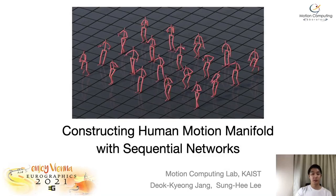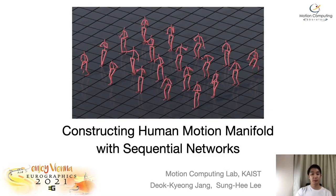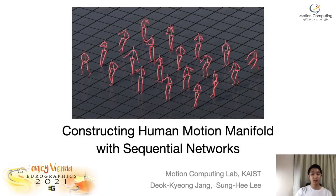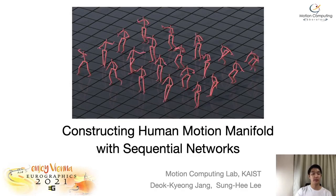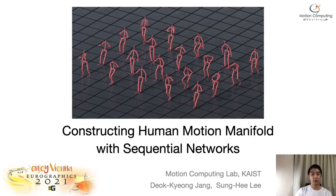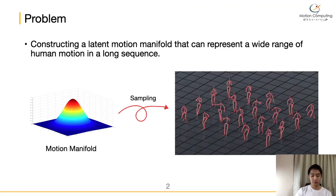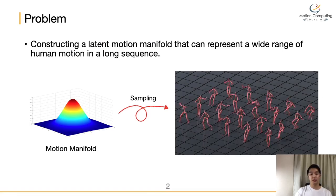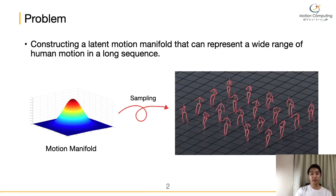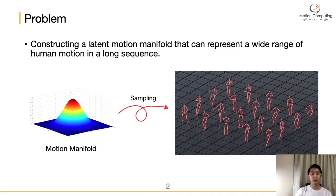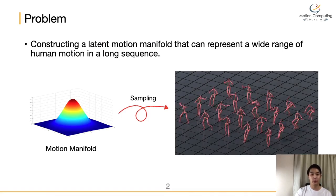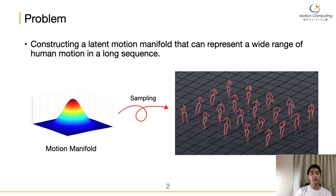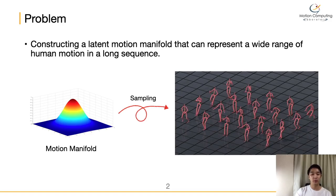Thank you for the introduction. Let me present 'Constructing Human Motion Manifold with Sequential Networks.' The purpose of this paper is to present a novel recurrent neural network-based method to construct a latent motion manifold and to produce various human motions from the motion manifold.